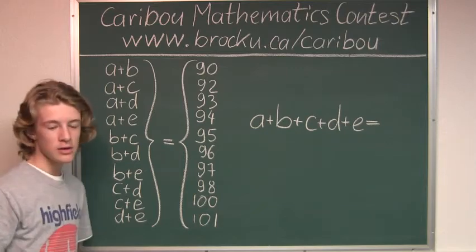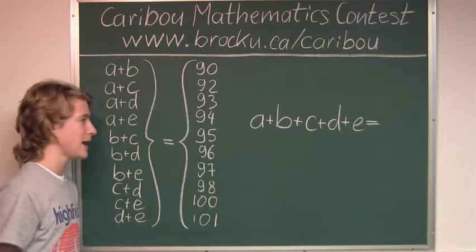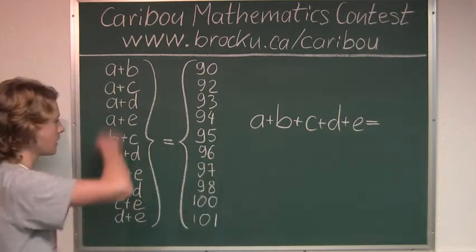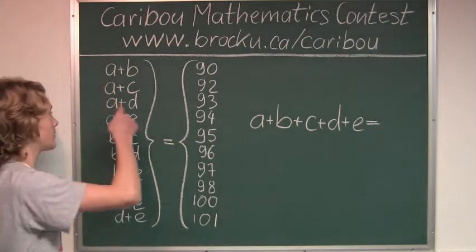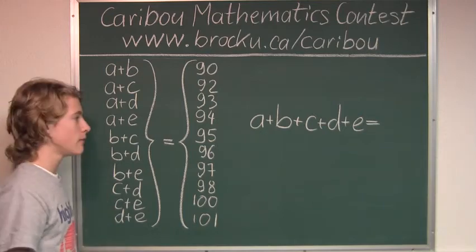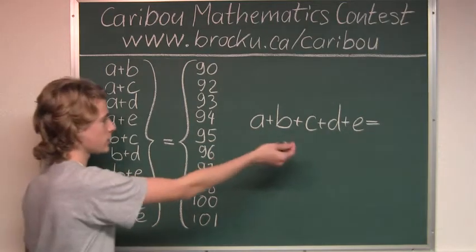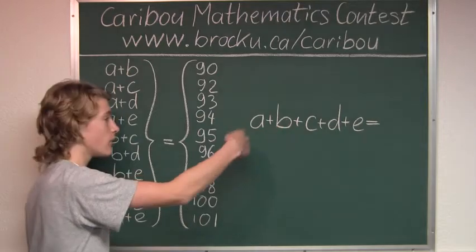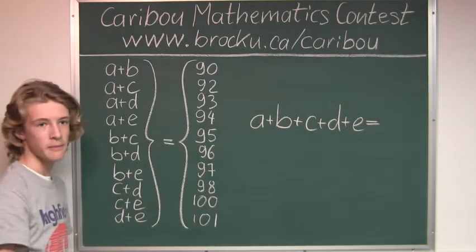So the only way to get something symmetrical in A, B, C, D, and E from the left side is to either add up all these sums or multiply all these sums. Now, we would obviously add all these sums because we are looking for the sum of all of the 5 children's weights combined.